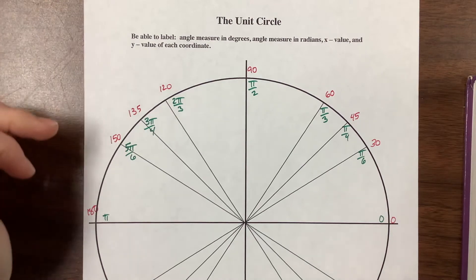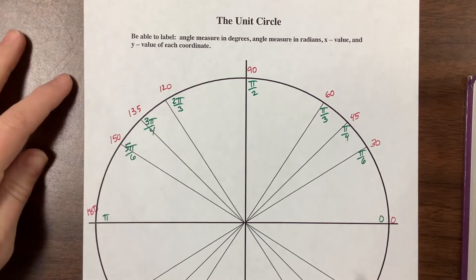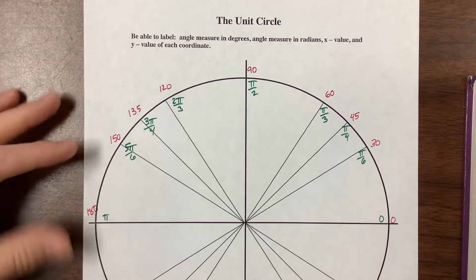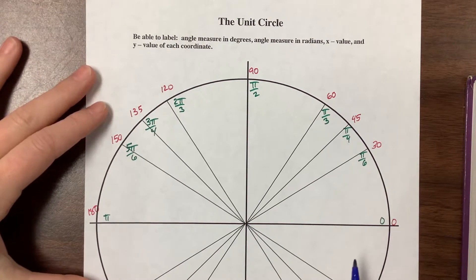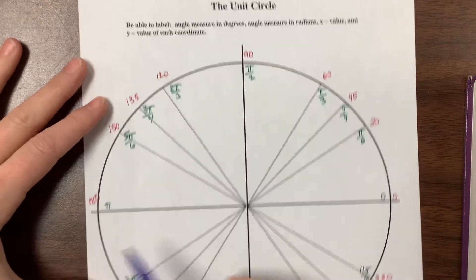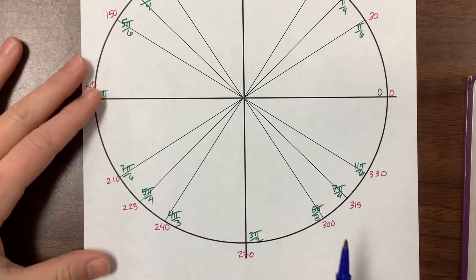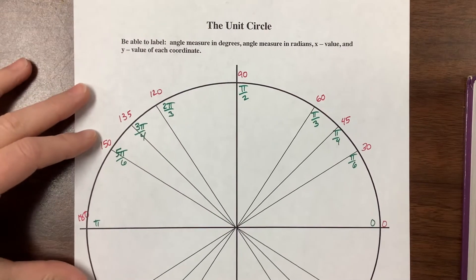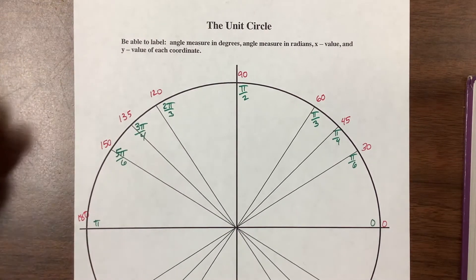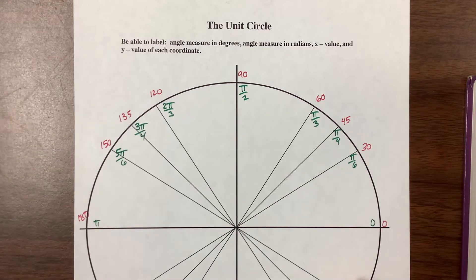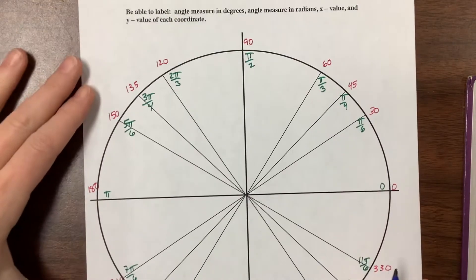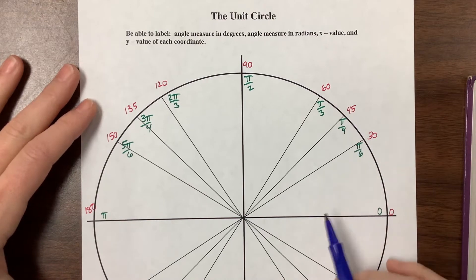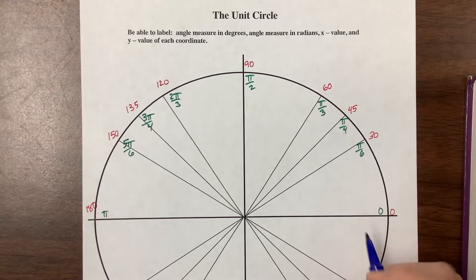In this video I want to talk through the coordinates on the unit circle and why we care. I've already put in the radians in green and the degrees in red. I'm going to expect all of my students to be able to do this by memory. You need to know the unit circle, the degrees, the radians, and the x and y coordinates, which is what I'm about to talk through.